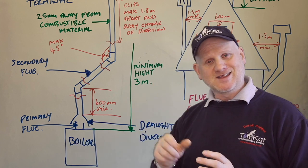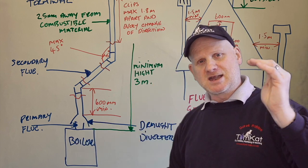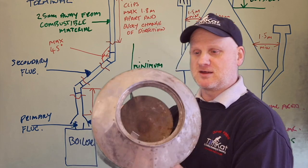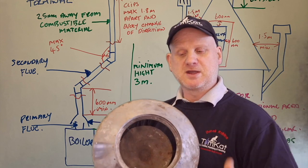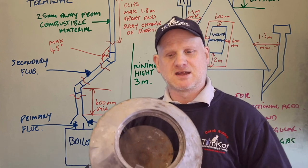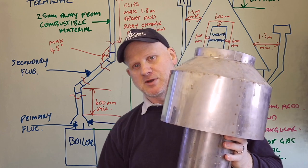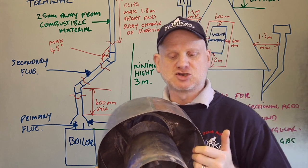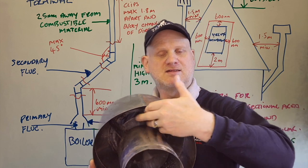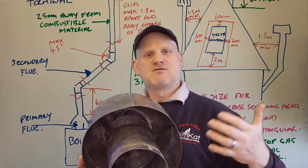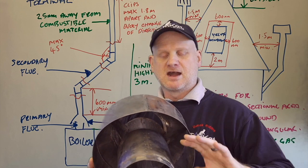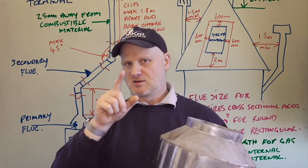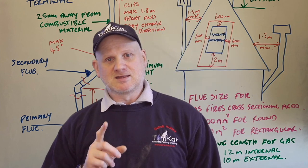The draft diverter is incredibly important. It can either be external like this one shown here. You can see this is where the flue would be connected, and you can see the baffle on the inside. This is where it would be connected to the appliance. This is where we would do the flue flow test and spillage. If we have excessive pull, this is where it would be broken. If we need to dilute the air, this is where it comes in. If we have downdraft, it would come out here. A lot of them are built into the appliance.